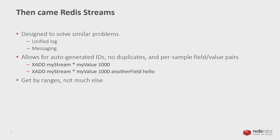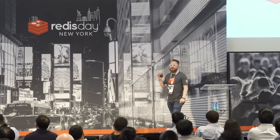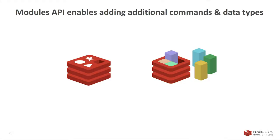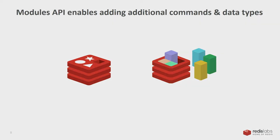Around the same time that Streams came out, the Modules API became generally available. You've probably heard us talk about modules all day long, but what modules really do is enable you to plug in additional data types and commands right into Redis — and those are first-class citizens in the whole infrastructure. Somebody can write one today if they wanted to. They allow you to plug into Redis and they are just as good as a sorted set, just as good as a set, just as good as a string — and just as fast.